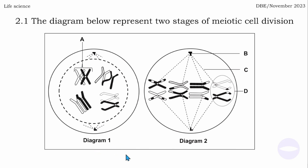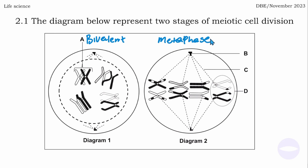Before we start, let me give the labels. Label A - these are homologous chromosomes touching each other. This pair of chromosomes is called a bivalent. In diagram 2, the chromosomes are lining up at the equator. We have eight chromosomes lining at the equator, so this is metaphase 1. While diagram 1 is prophase 1.